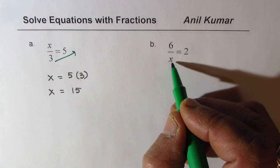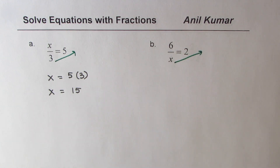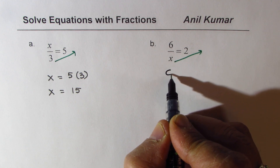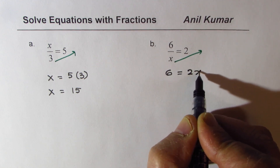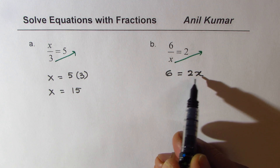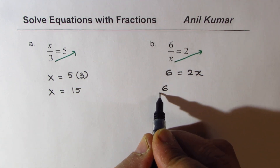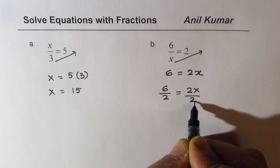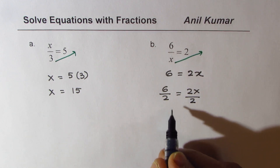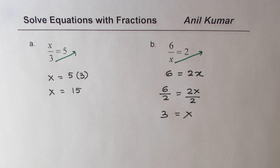In this case it'll be a two-step problem. We'll multiply by X, so what we get is 6 equals 2 times X. Now to get X, we divide both sides by 2: 6 divided by 2 equals 2X divided by 2, and that gives us 3 equals X.